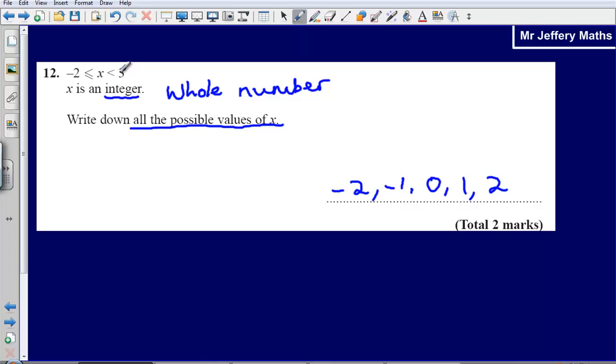It could not be 3, because we're told that it is less than 3. So it can't be equal to 3. If we had a little line under here, it could also be equal to 3 as well, but we haven't. So it has to be less than 3.